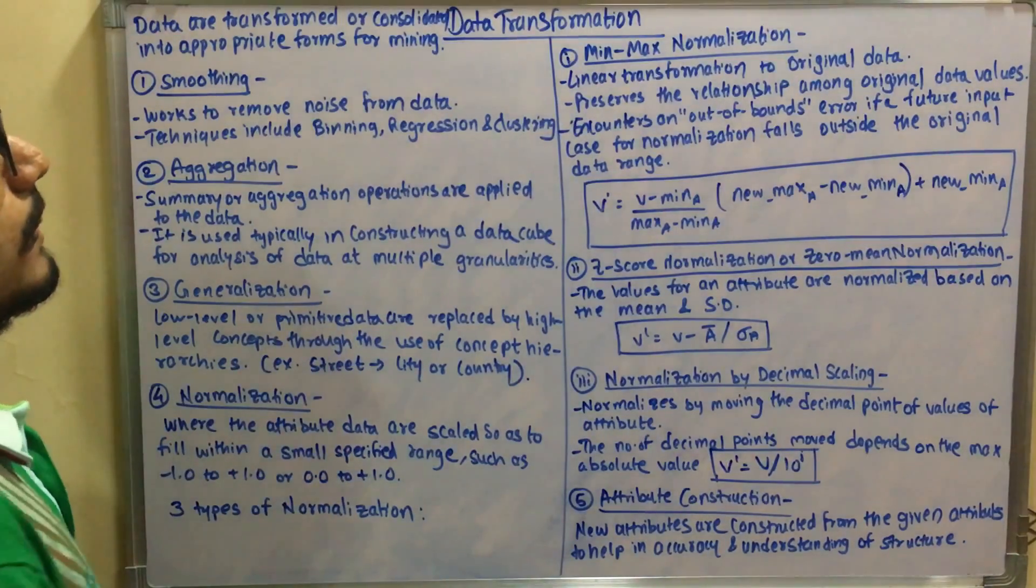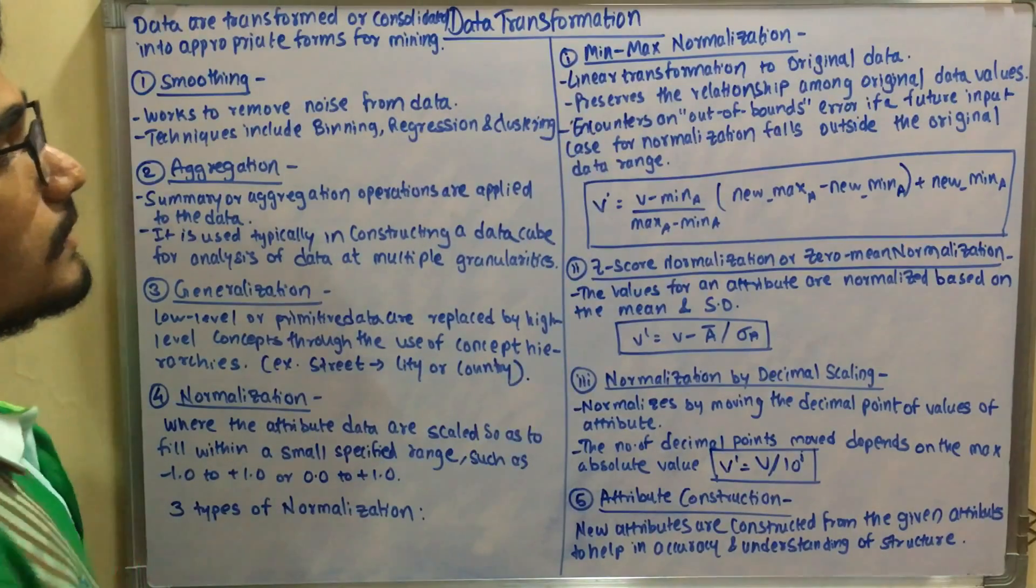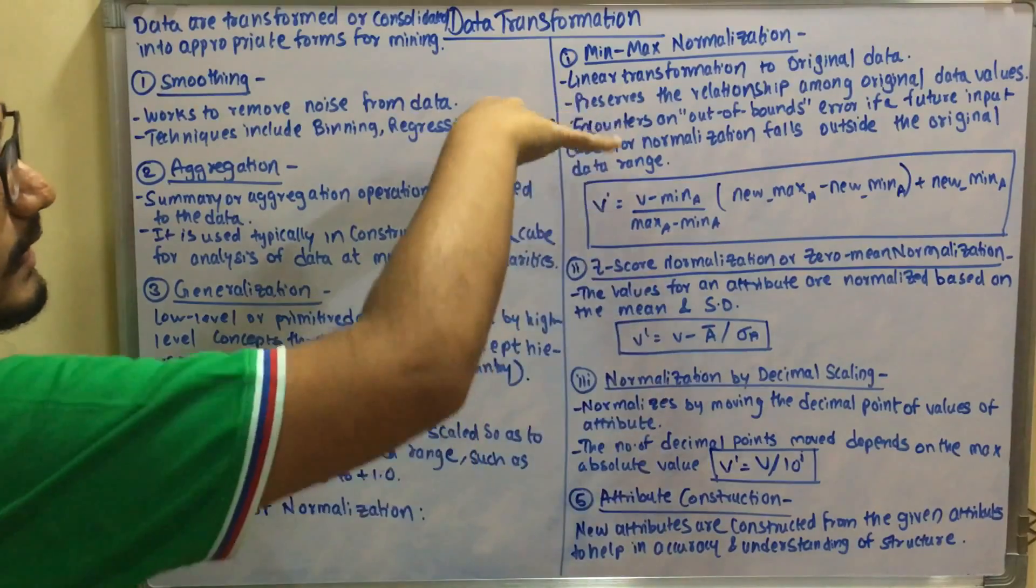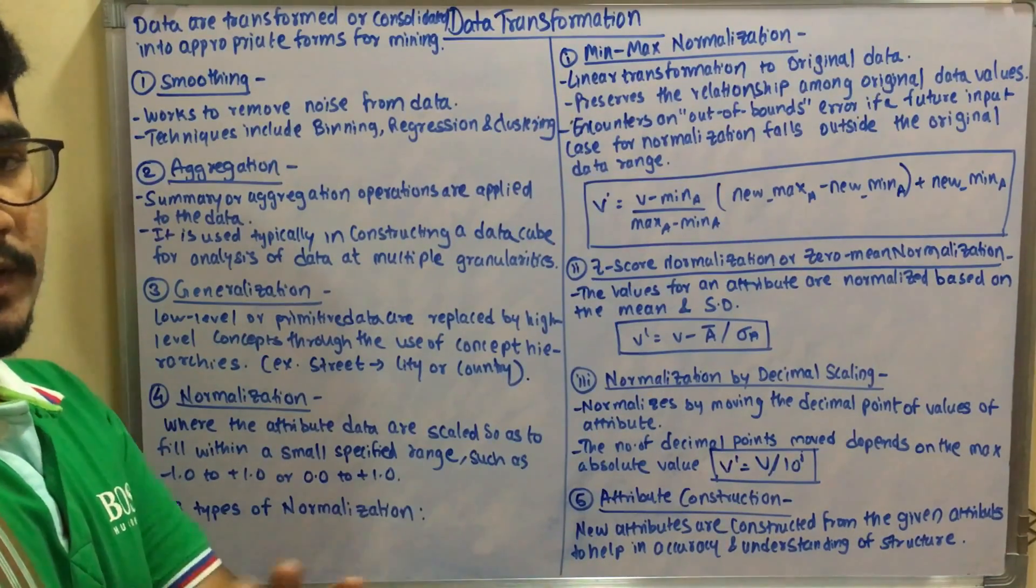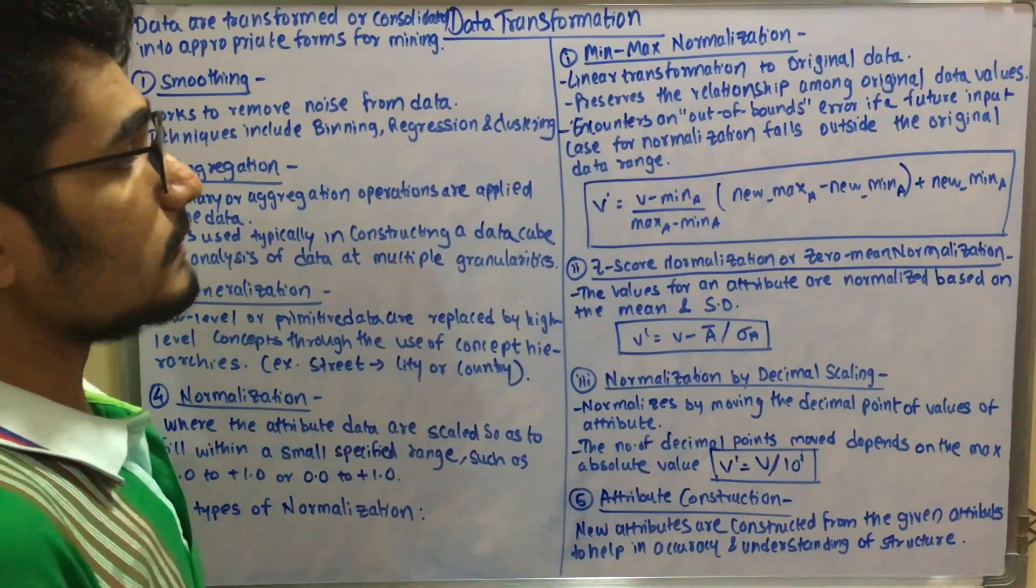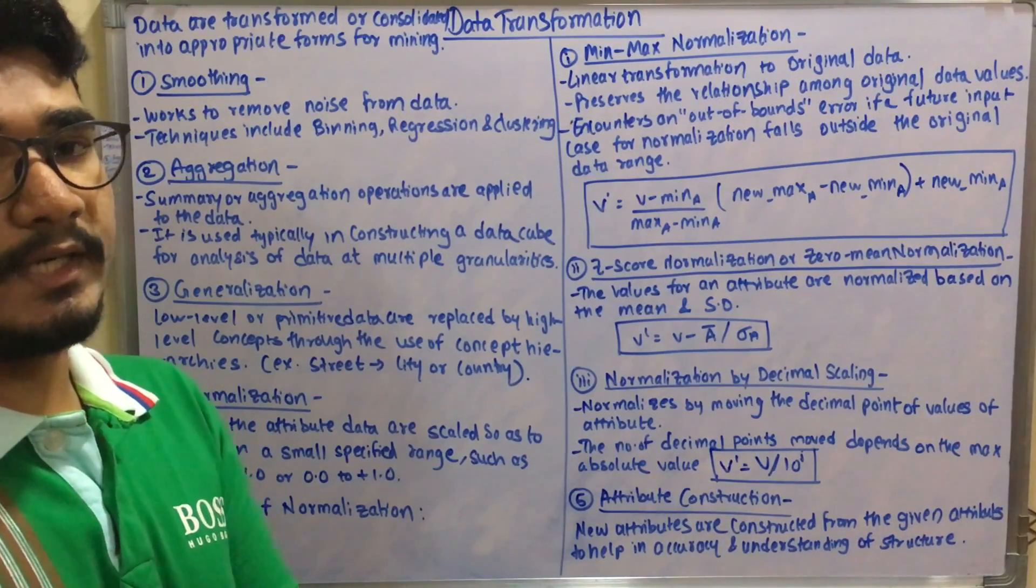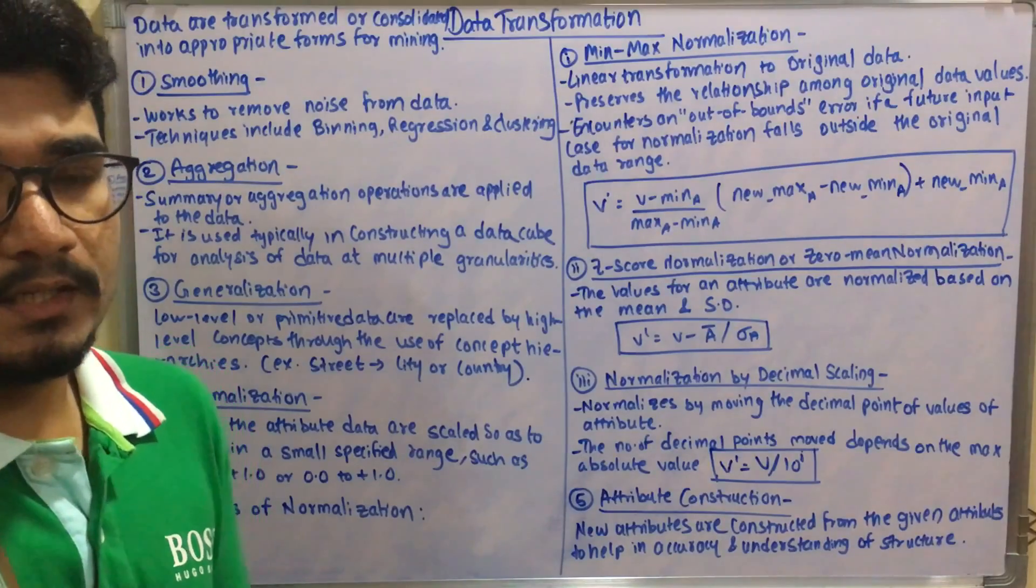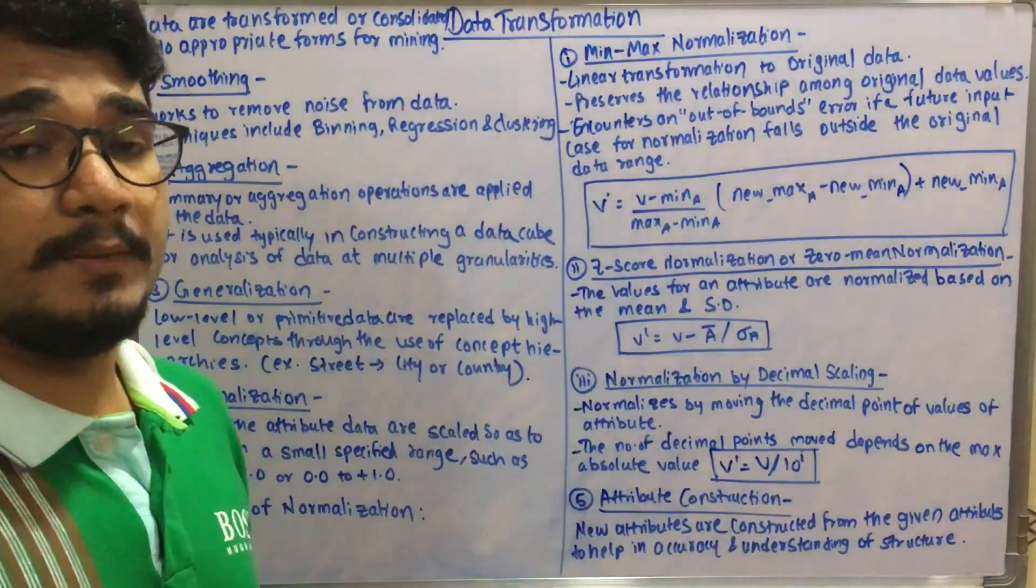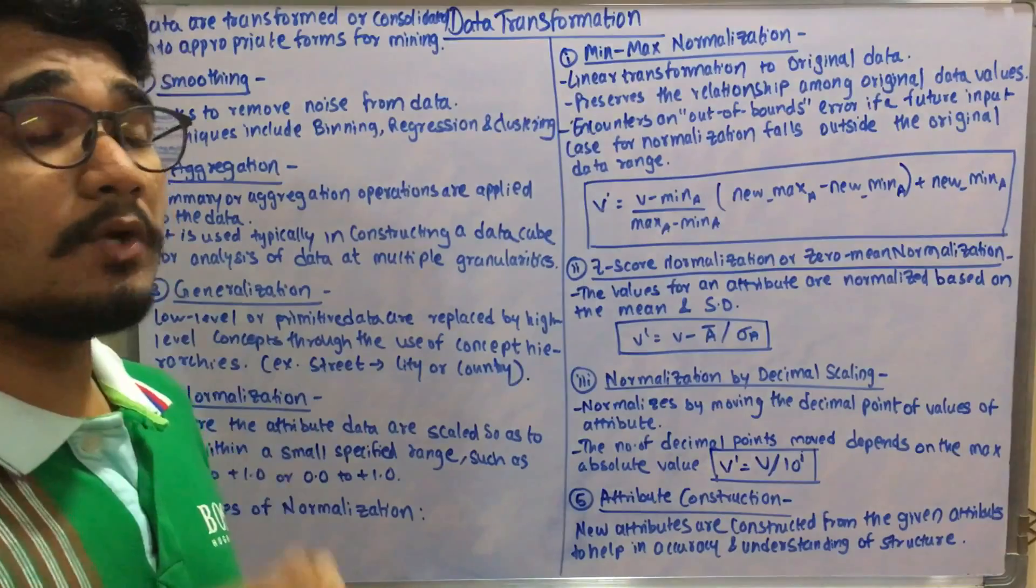The very first is min-max normalization, that is minimum-maximum value normalization. It's a kind of linear transformation to the original data, so it linearly transforms the data from the raw data and it preserves the relationship among the original data values. There's no kind of relationship unmatching or mismatch, so the original attribute relation is preserved. That is a very big advantage to min-max normalization.